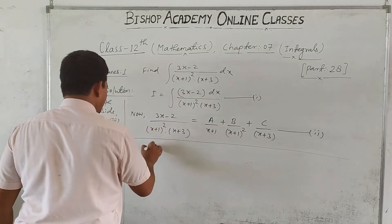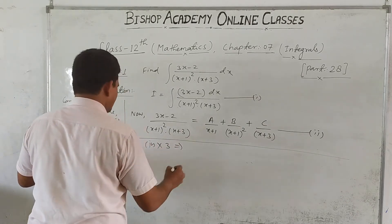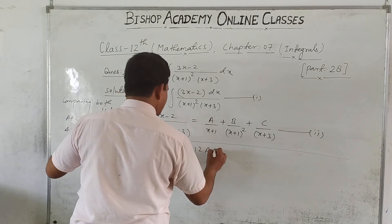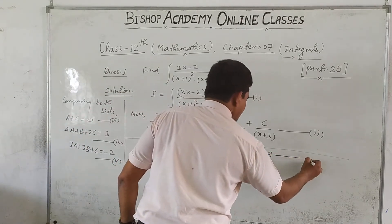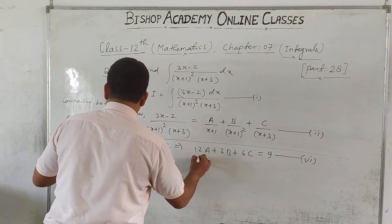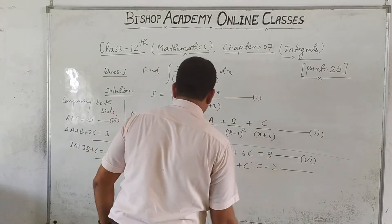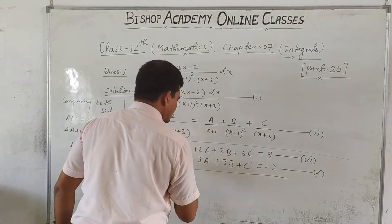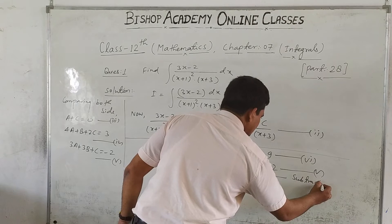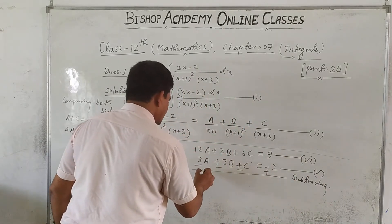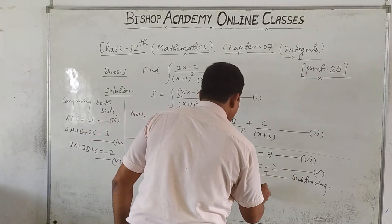From equation 4, multiplying by 3: 12A + 3B + 6C = 9, equation 6. Equation 5 is 3A + 3B + C = -2. Subtracting equation 5 from equation 6: 9A + 5C = 11, equation 7.